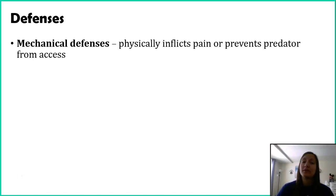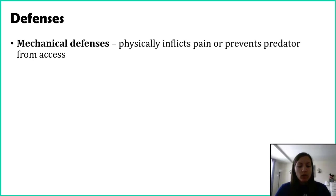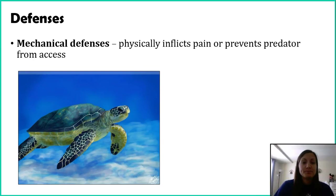Mechanical defenses are physical attributes of an organism that are either inflicting pain on the predator or preventing the predator from actually eating that organism. These are things that you see, you feel, you notice about the organism.